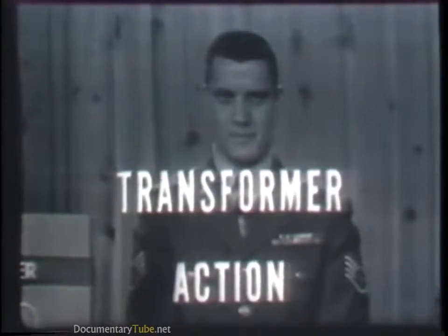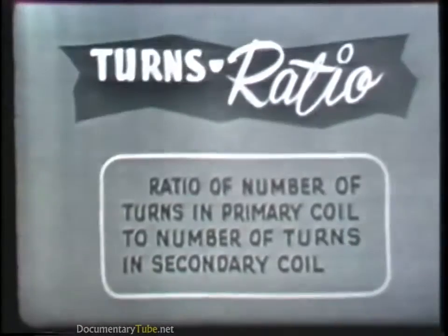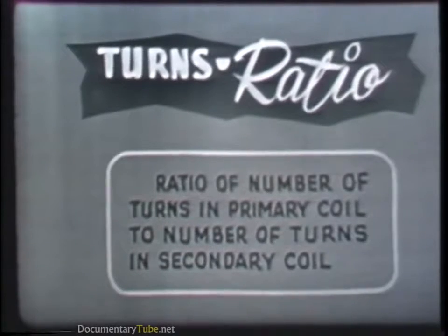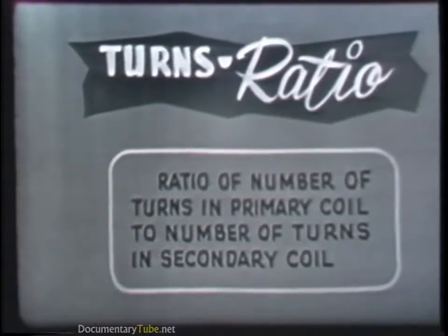This process of transferring electrical energy, or voltage, from the primary coil to the secondary coil through electromagnetic induction is commonly referred to as transformer action. The transformer can step a voltage up or it can step it down. The voltage increase or decrease is determined by the turns ratio of the particular transformer — the ratio of the number of turns in the primary coil to the number of turns in the secondary coil.